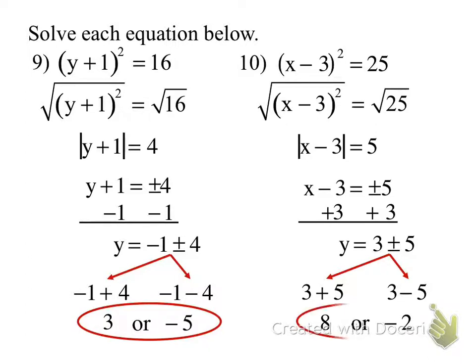Questions? Okay. Pause the recording, finish number 10. Okay, let's check the work. We're going to root both sides. We get the absolute value of x minus 3 equals 5. To lose the absolute value, I set it plus or minus 5. I add 3 to both sides. So we get 3 plus 5 is 8, and 3 minus 5 is negative 2. Questions?